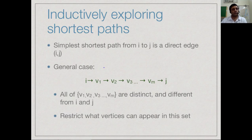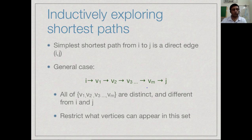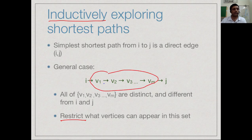We are going to build up shortest paths in terms of which vertices we allow in between. The simplest shortest path between a pair of vertices is just a single edge. In general this may not be the shortest path because even with negative edge weights there may be a longer path from i to j with a shorter overall cost. What we know is that this path from i to j goes through some intermediate vertices, all different from each other, and none of these intermediate vertices is either i or j.